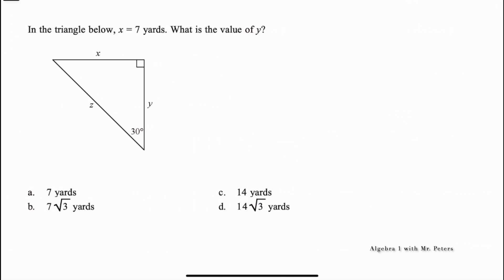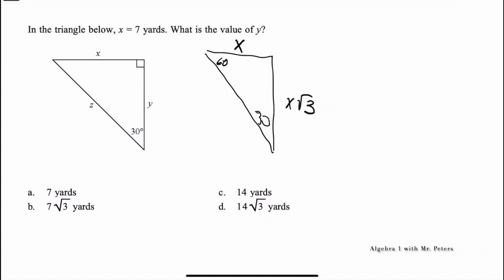Now we're dealing with a 30-60-90 triangle. The special relationships are: the short leg is X, the side adjacent to the 30-degree angle is X√3, and the hypotenuse is 2X. They tell us X = 7 yards. So the value of Y, the side next to the 30-degree angle, is 7√3, making the answer B. If they asked for Z, it would just be 14 — taking the short leg and multiplying by 2.